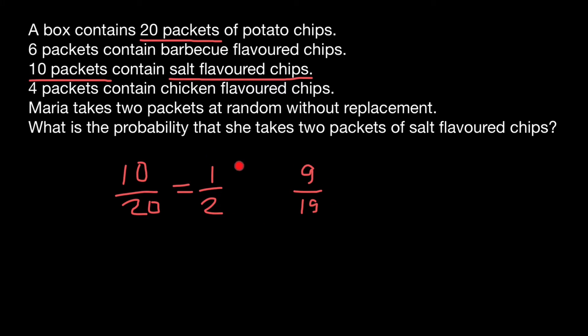Now the question is: should we add these two probabilities or should we multiply them? We actually have to multiply these two probabilities. Whenever we connect two probabilities with the word 'and', we have to use the product rule. We can say: what is the probability that Maria chooses the first pack of salt flavored chips — and it is one half — and the second pack is also going to be salt flavored chips. Because we connect these two probabilities with the word 'and', we have to use the product rule. In this case, the answer is going to be nine over 38.